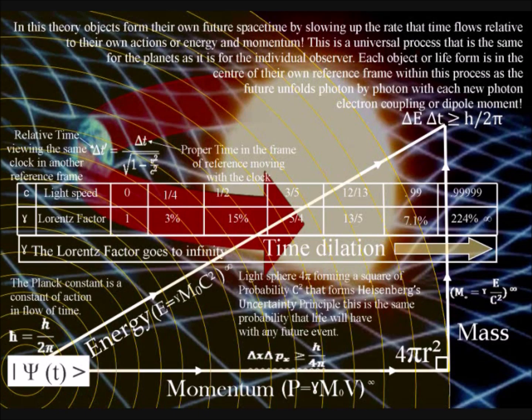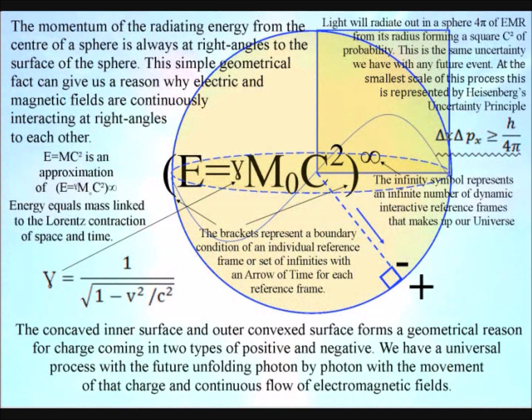The momentum of the radiating energy from the center of a sphere is always at right angles to the surface of the sphere. This simple geometrical fact can give us a reason why electric and magnetic fields are continuously interacting at right angles to each other, with a concave inner surface and outer convex surface forming a geometrical reason for charge coming in types of positive and negative.